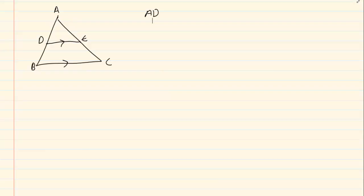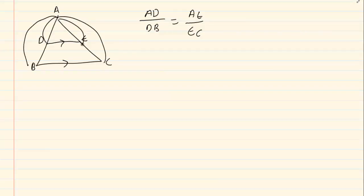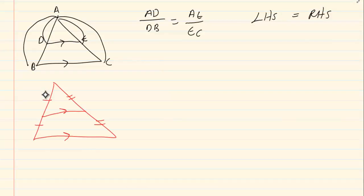So in other words I could say that AD over DB is equal to AE over EC. But likewise I could use any other proportion like AB over AD is equal to AC over AE, provided that I always made the left hand side exactly the same as the right hand side. The second theorem we learned was that if it cuts at the midpoint then the length of the parallel line is half the length of the bottom line.